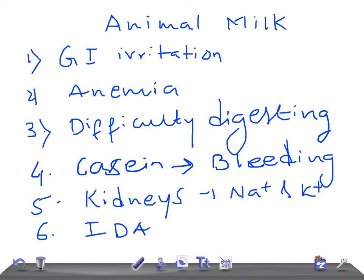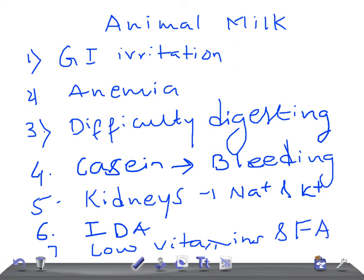Animal milk also has low vitamins and essential fatty acids. So these are the important points about animal milk. Before feeding your baby, you should know about these disadvantages of feeding animal milk to an infant less than one year of age.